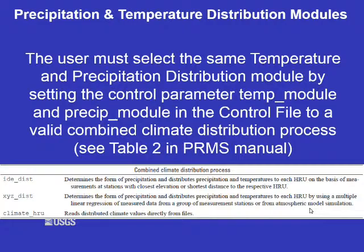Now we will discuss the modules for precipitation and temperature distribution. In your control file, you need to set both the precip_module and temp_module control parameters to the same precipitation and temperature distribution module name. The table shows the choices, straight out of table 2 in the PRMS manual.